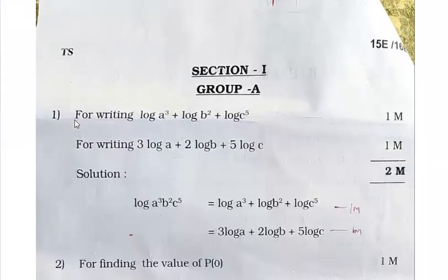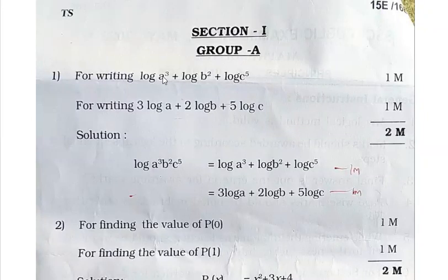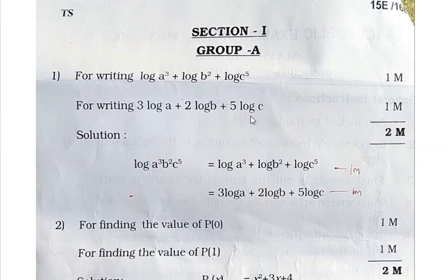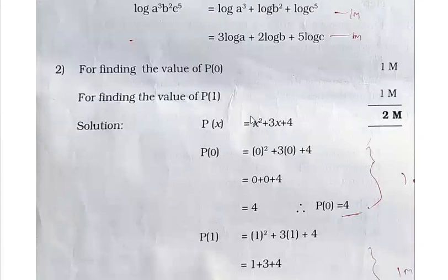For each and every question, stepwise marking is given here clearly — for which step how many marks. Look at Section 1, the two-mark questions. For Group 1, first question: if you expand log(a³b²c⁵), for that expansion you get one mark, and if you further expand using the logarithm formula — log(aⁿ) = n·log(a) — writing that step gets one mark. So two marks total.